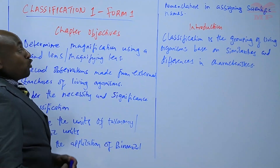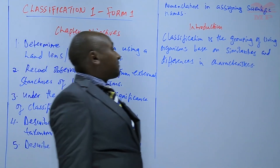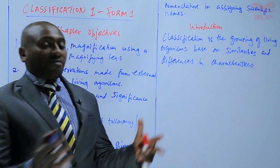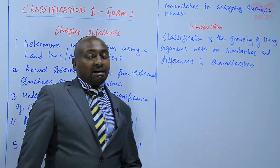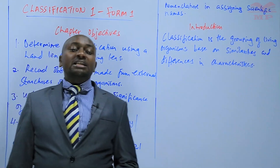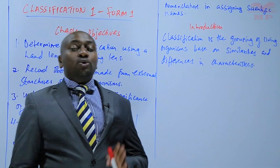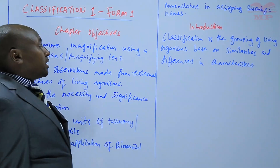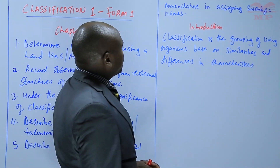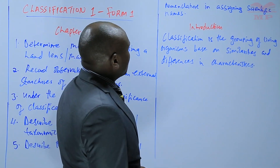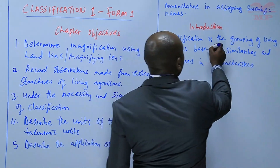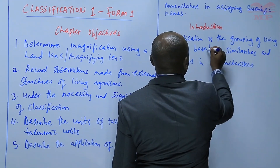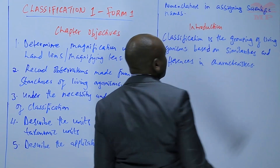That means that for those organisms that share many similarities, they are classified together. Those that have different characteristics are grouped separately. So in this case, we are grouping according to similarities and differences in characteristics.